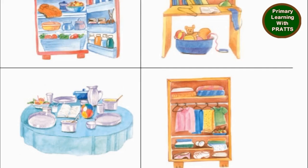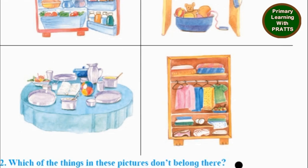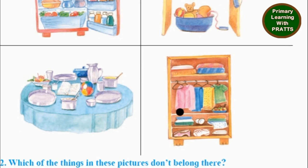Looking at the other two pictures: this is a dining table, and what is out of place? A ball and a book. And in this closet, wardrobe, or cupboard, what is out of place? You can see eggs here and you can see cake here. So in this wardrobe, cake and eggs are out of place.